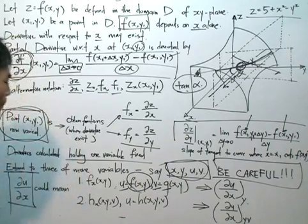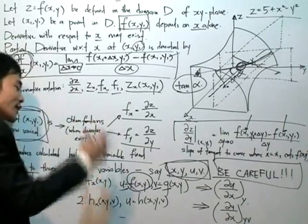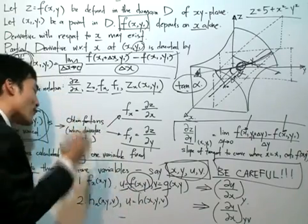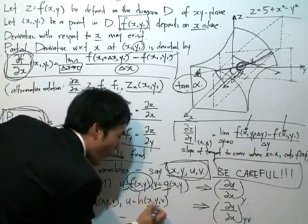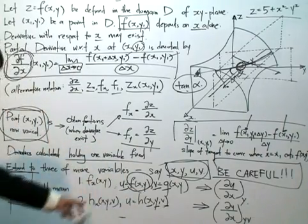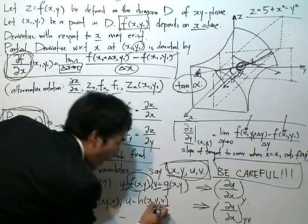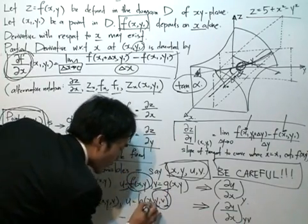It could also mean, number two, that now I'm taking the partial derivative of another function h. But this time h is defined in terms of x, y, and v. And when I take the partial derivative of that, what I'm doing is actually I'm holding y and v fixed and I'm varying x.